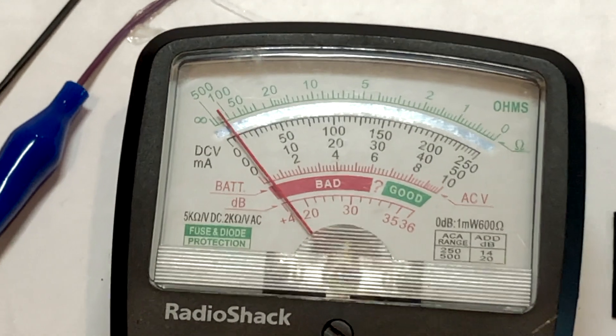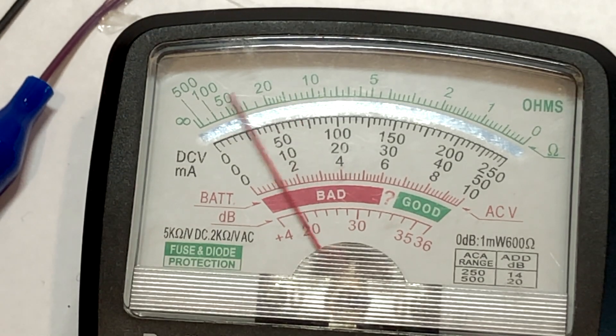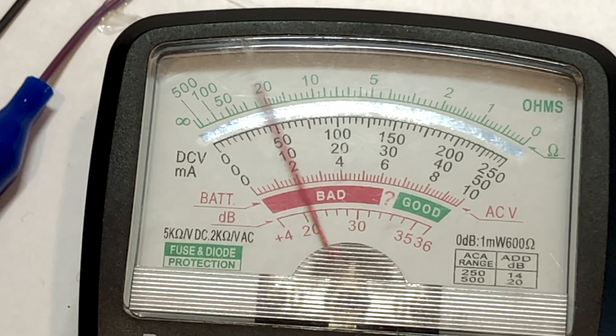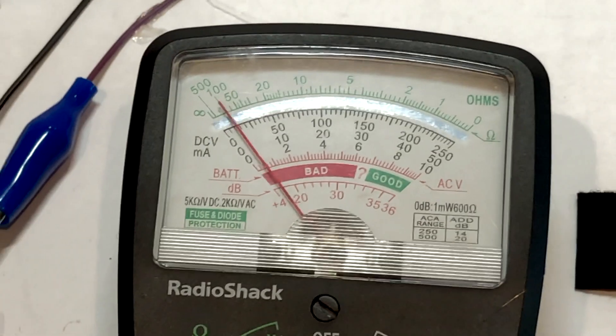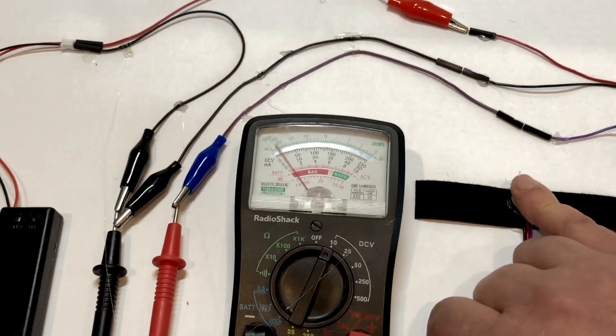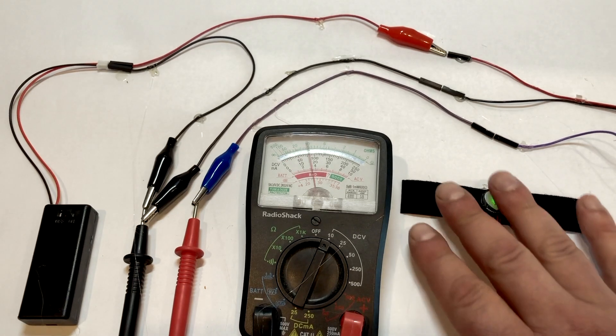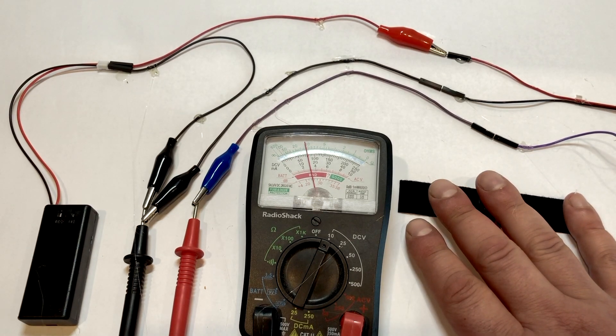In this example, where we are powering the Pulse Sensor with 3 volts, the needle oscillates around 1.5 volts. The Pulse Sensor puts out a voltage that's oscillating around half of the voltage in that you give the Pulse Sensor.